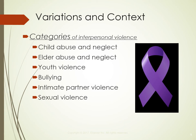Child abuse and neglect encompasses a wide variety of forms of maltreatment, including physical abuse, sexual abuse, and neglect. The Federal Child Abuse Prevention and Treatment Act defines child abuse and neglect as any recent act or failure to act on the part of the parent or caretaker that results in death, serious physical or emotional harm, sexual abuse or exploitation, or any act or failure to act that presents an imminent risk of serious harm. Bullying is also a form of abuse — it consists of intimidation or domination toward an individual who is perceived by the perpetrator as weak. Youth violence refers to harmful behaviors such as slapping, hitting, or physical assault with or without weapons, which can start early and continue into young adulthood.